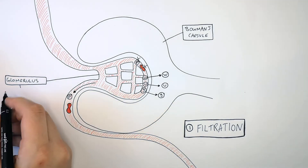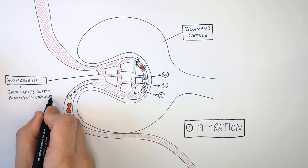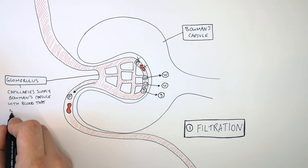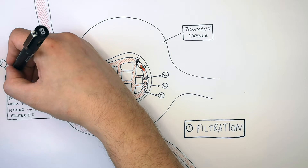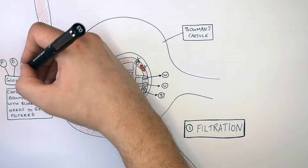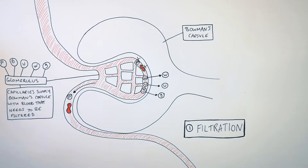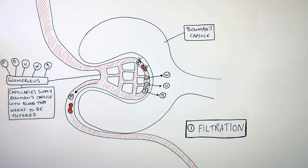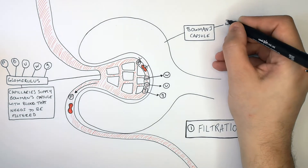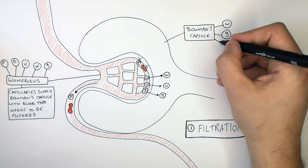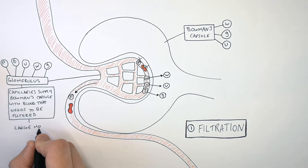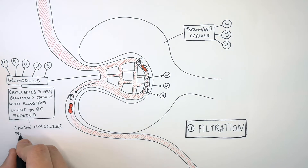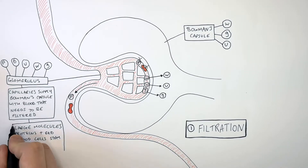The glomerulus capillaries supply the Bowman's capsule with blood that needs to be filtered. This blood contains proteins, blood cells, urea, water, and glucose. Inside the Bowman's capsule you're going to find water, glucose, and urea from the filtered blood, because large molecules such as proteins and red blood cells stay in the blood and do not enter the nephron.